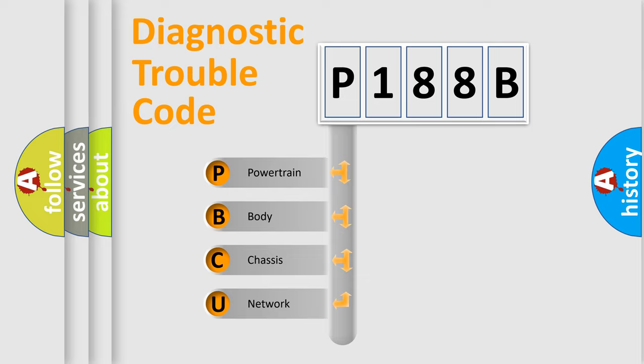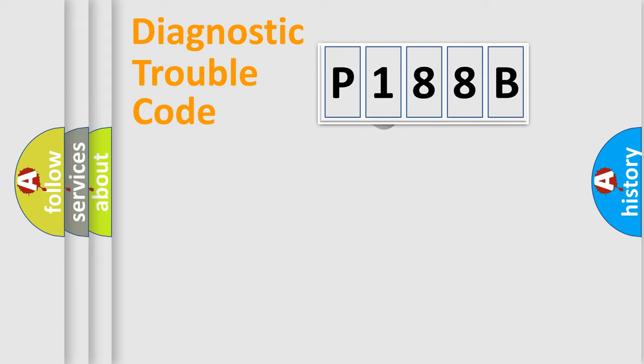We divide the electric system of the automobile into four basic units: powertrain, body, chassis, and network. This distribution is defined in the first character code.